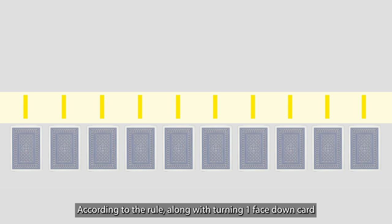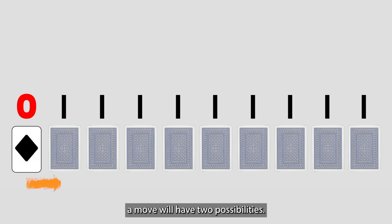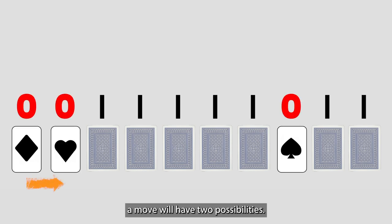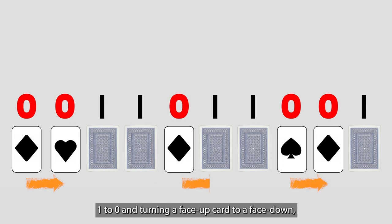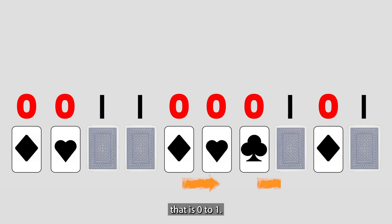According to the rule, along with turning one face down card, a move will have two possibilities: turning a face down card to face up, that is from 1 to 0, and turning a face up card to a face down, that is 0 to 1.